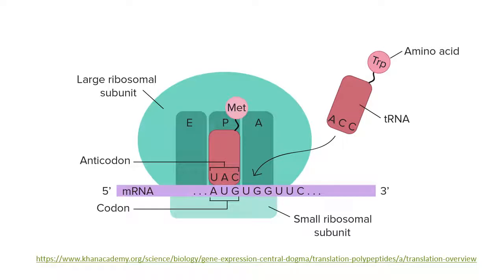Before we go into detail about initiation factors in the initiation complex, let's talk about translation. Translation is the process of taking mRNA and turning it into a polypeptide that can be later folded into a protein. During translation in prokaryotes, the mRNA interacts with the 70S ribosome, aminoacyl tRNAs, and a couple of other factors to produce the polypeptide.